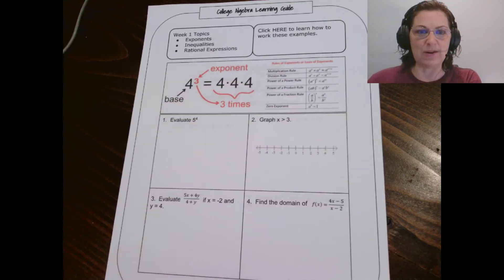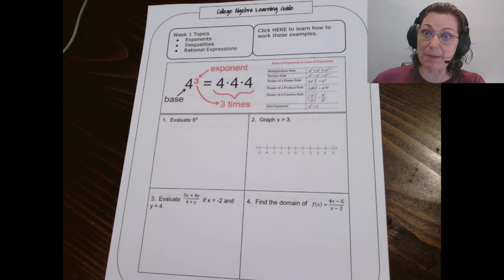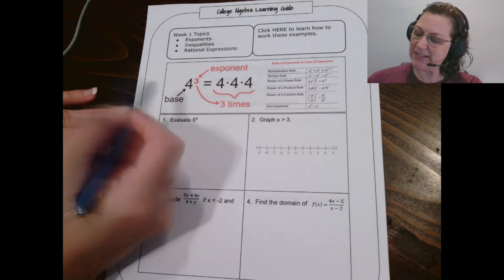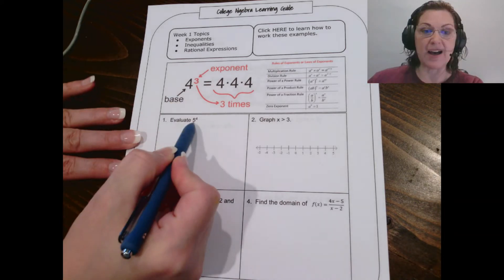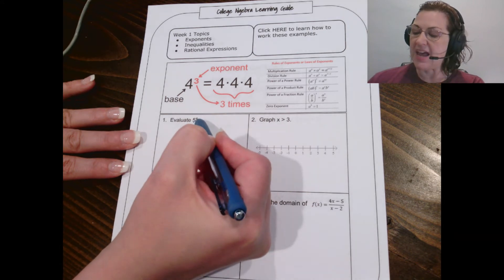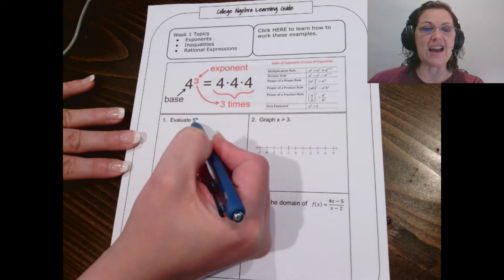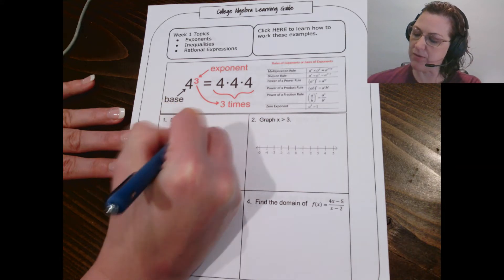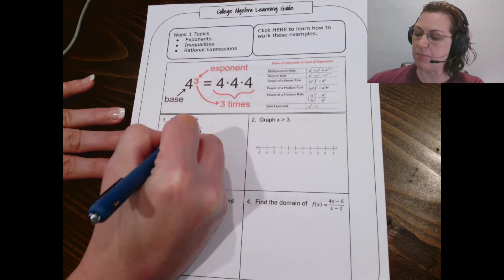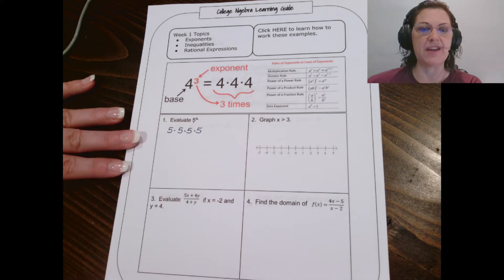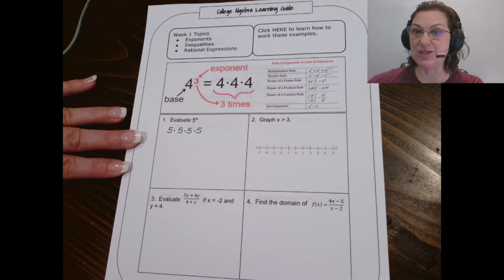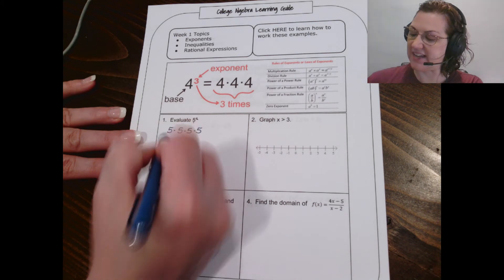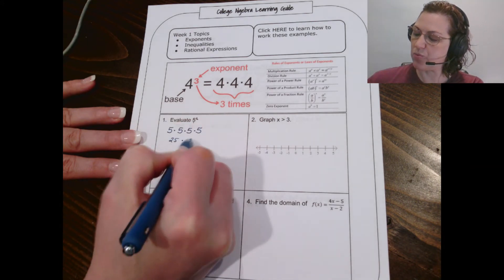So let's jump in. Number one, here I've got 5 to the fourth power. According to here, the base would be 5, the exponent would be 4. That means to write our 5 four times, so I'll write it four times: one, two, three, four, and I multiply with each one of them. So I'm going to go ahead and multiply that. That's 25 times 25, which is 625.